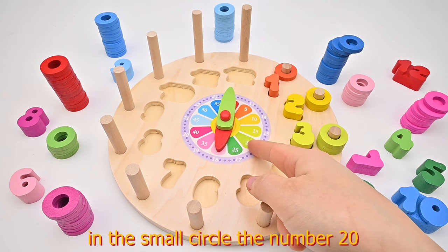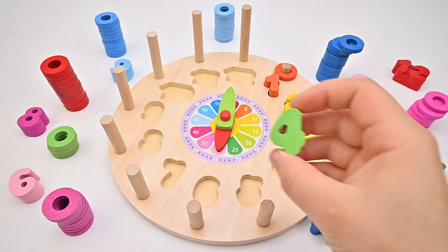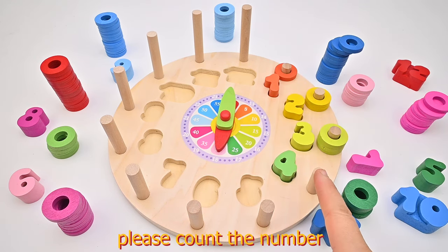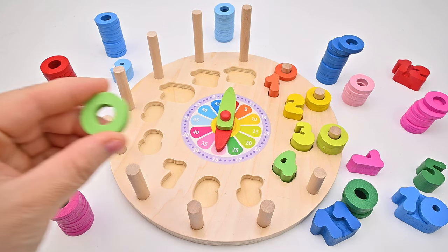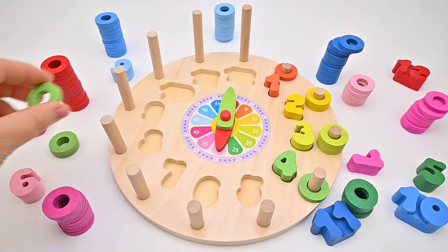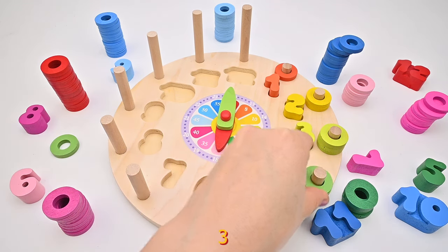In the small circle, the number 20 will correspond to the number 4 in the outer circle. Please count the number of rings in this column. 1, 2, 3.